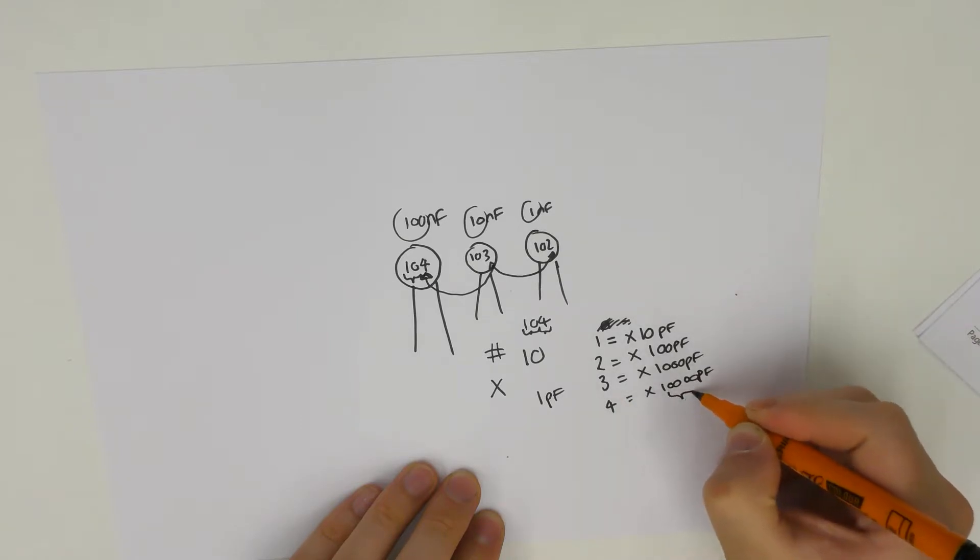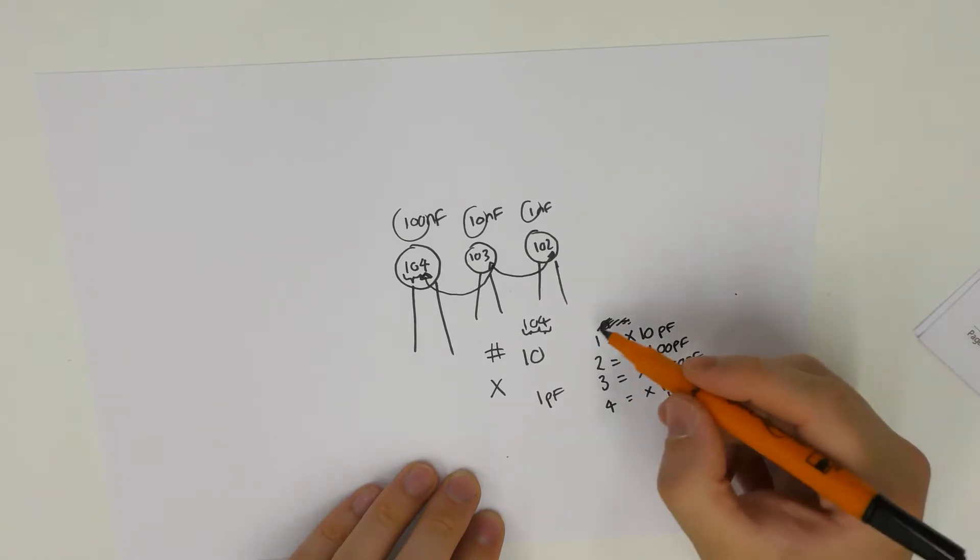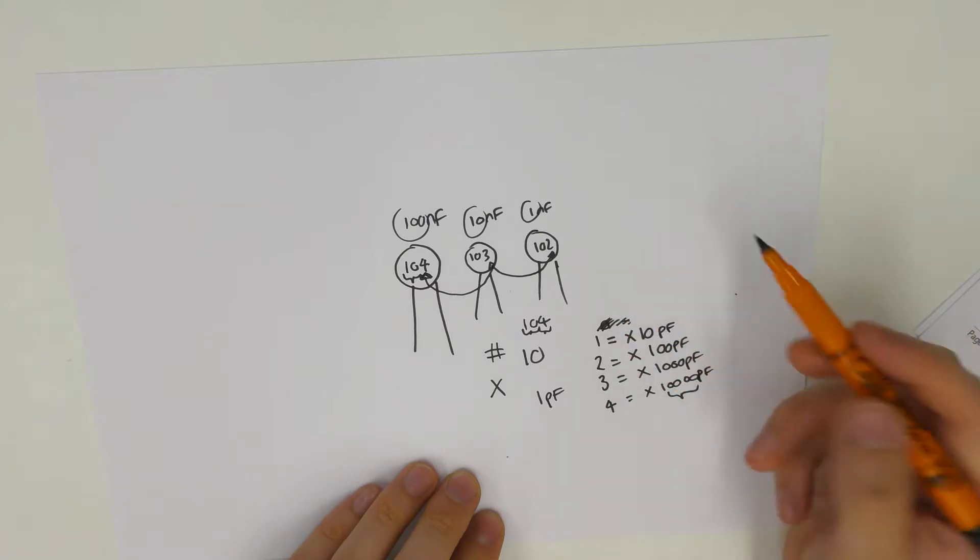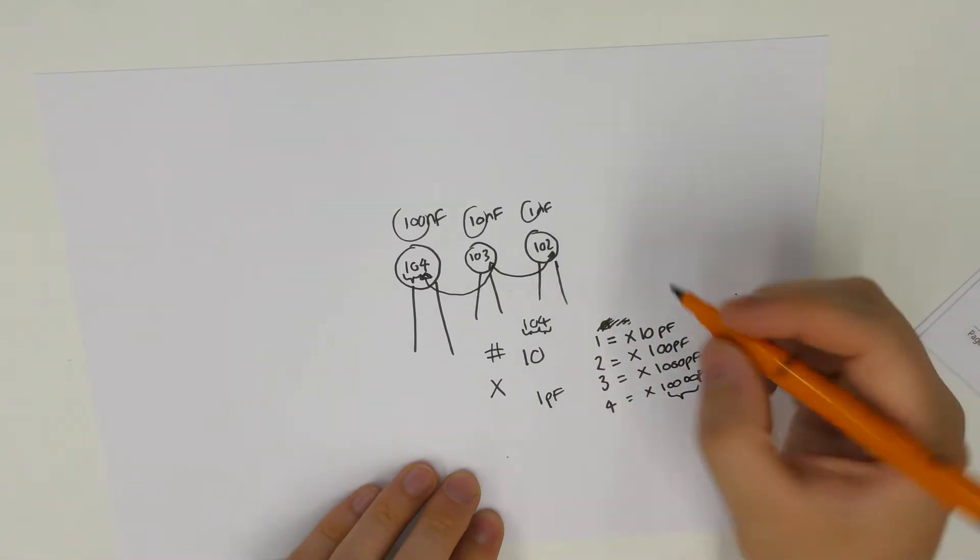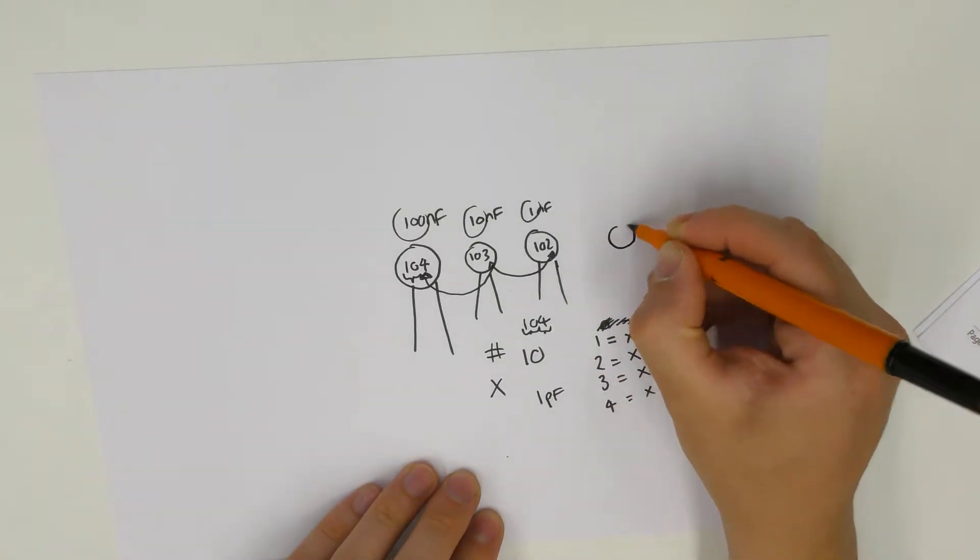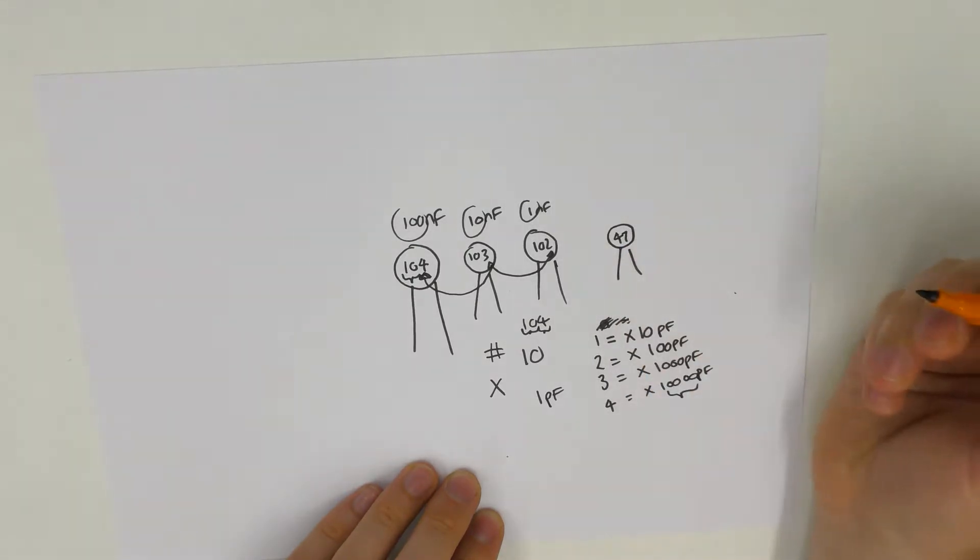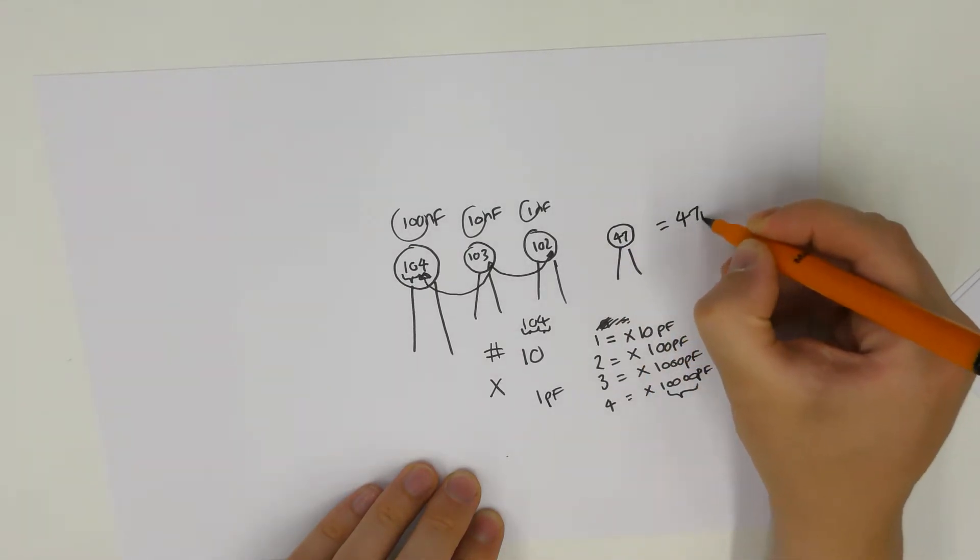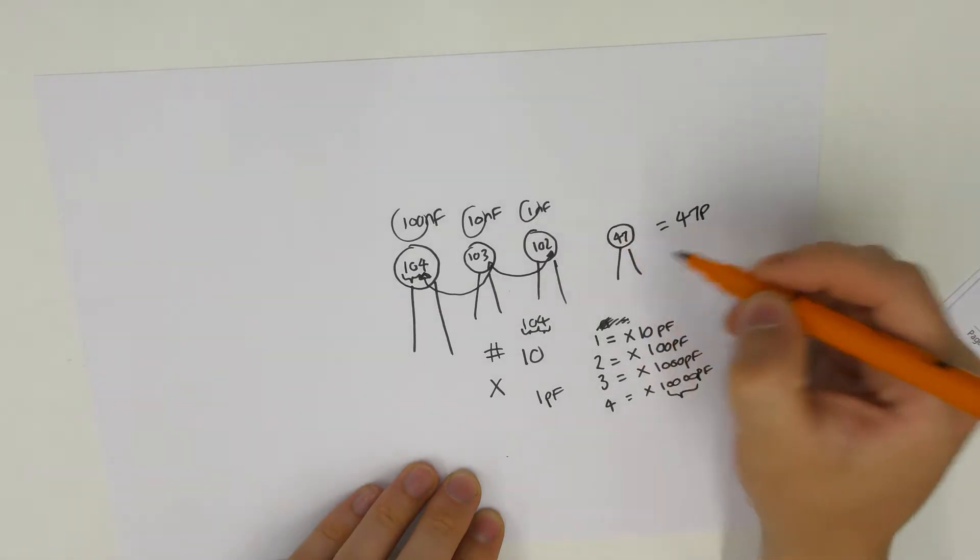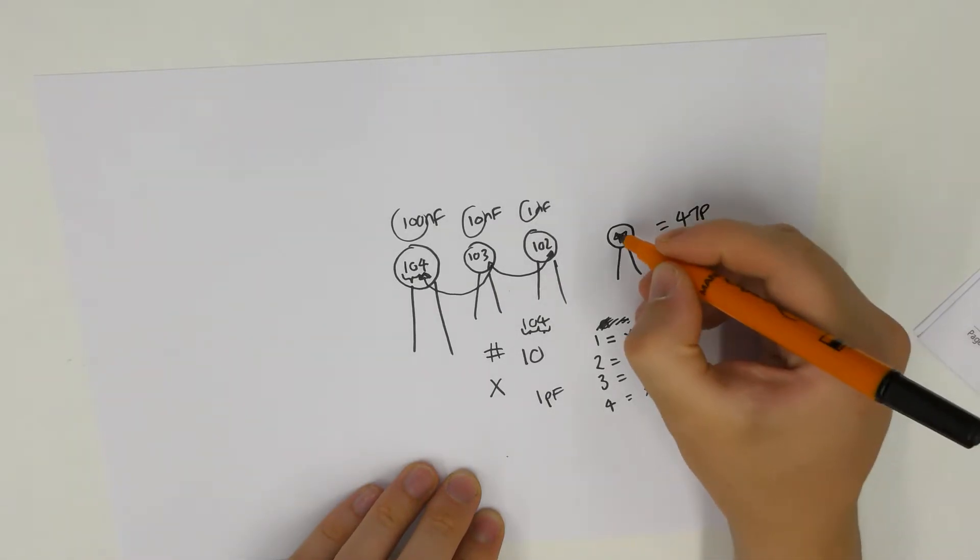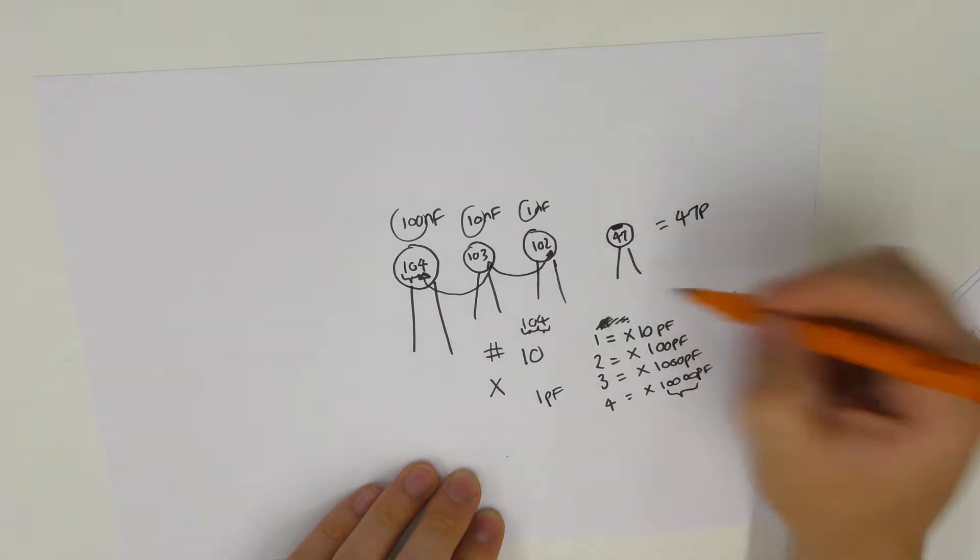Now, obviously, you wouldn't have a zero because that would just be a 1. But when you get less than the sort of 100 picofarads, that's when the number becomes the number itself. So, for example, if you have a capacitor with something like 4 and 7, that is just 47 picofarads.